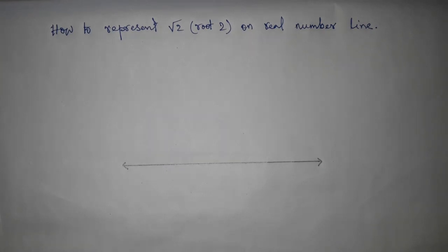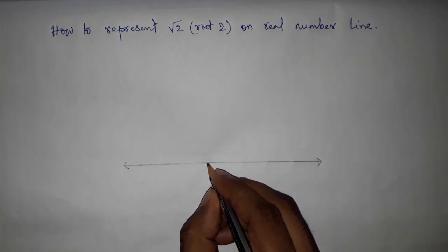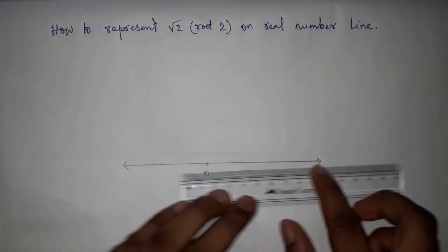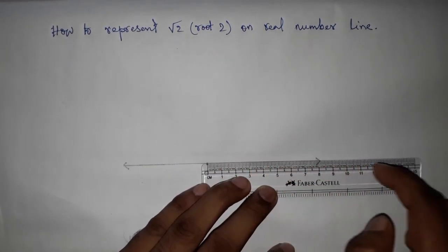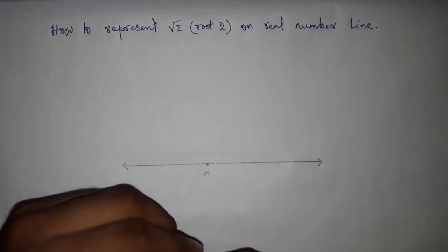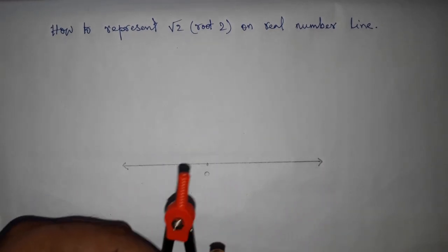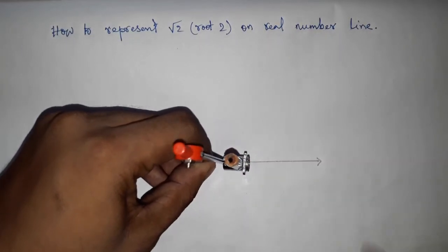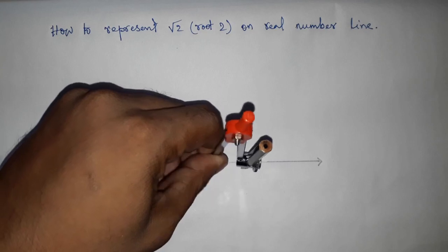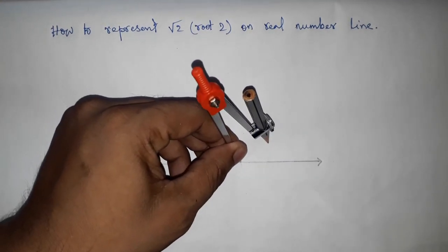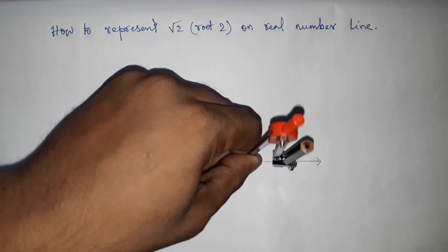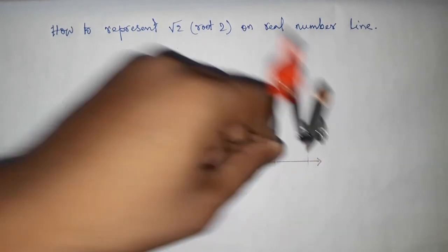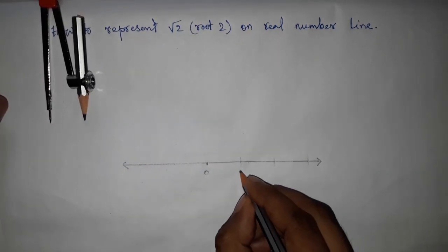Now marking all the numbers on this line. By using a scale, we can mark all the numbers 1, 2, 3, or we can use a pencil compass, taking any length and putting here and cutting the line by this way. So this is 1, and this is 2, and this is 3, and so on.